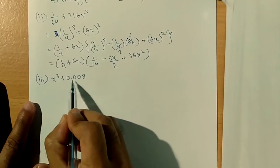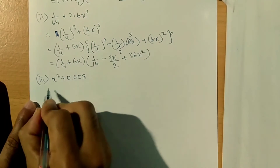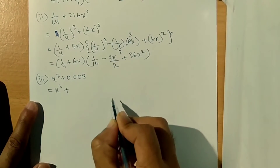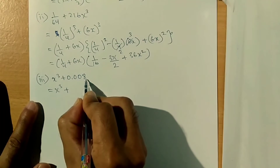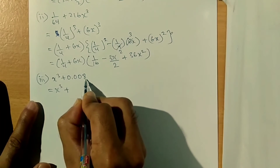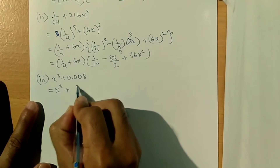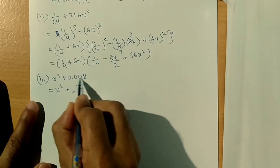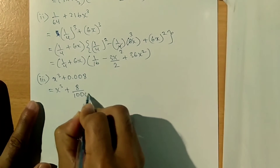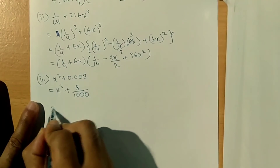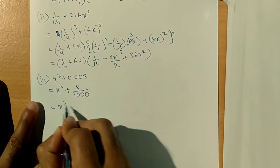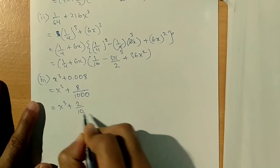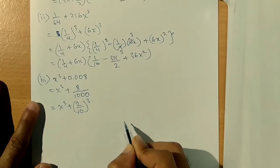Sub number 3: x cube plus 0.008. Now 0.008 equals 8 divided by 1000. And 8 by 1000 can be written as 2 by 10 cube. So we identify x cube plus 2 by 10 cube.